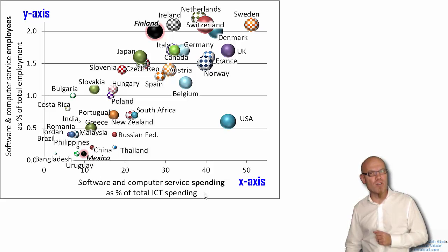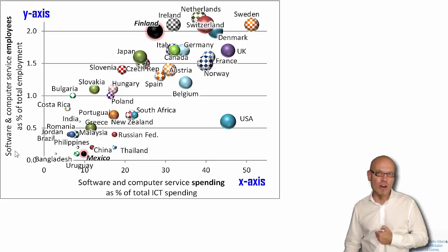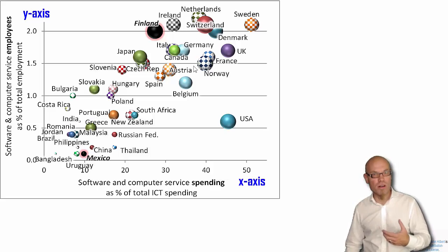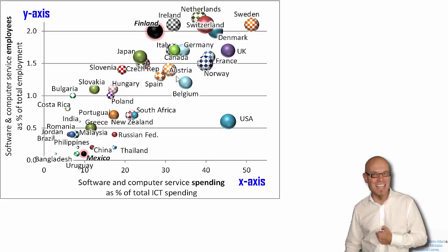There's a positive correlation between the amount of money that you can spend on software and computer services and the share of software and computer service employees in your economy. Developed countries spend more on software and have more software and computer service employees, whereas developing countries have less of both. The result is this kind of positive correlation on this diagonal axis.